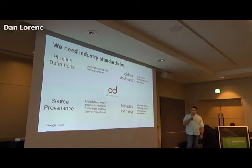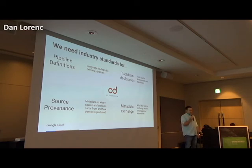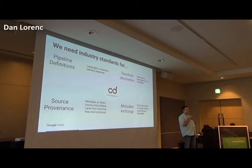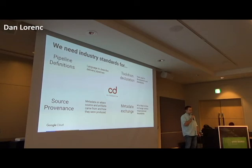We also need source provenance standards. Git commit logs contain email addresses, but without signing or DCO or other systems, there's no proof something in Git history actually came from an individual. We need standards for attaching this metadata to Git commits so we can figure out exactly where things came from — for example, if a developer was caught inserting backdoors, we'd want to identify every other package they touched. And we need metadata formats that transfer with packages as easily as pip install or npm install, so people will actually make use of them.